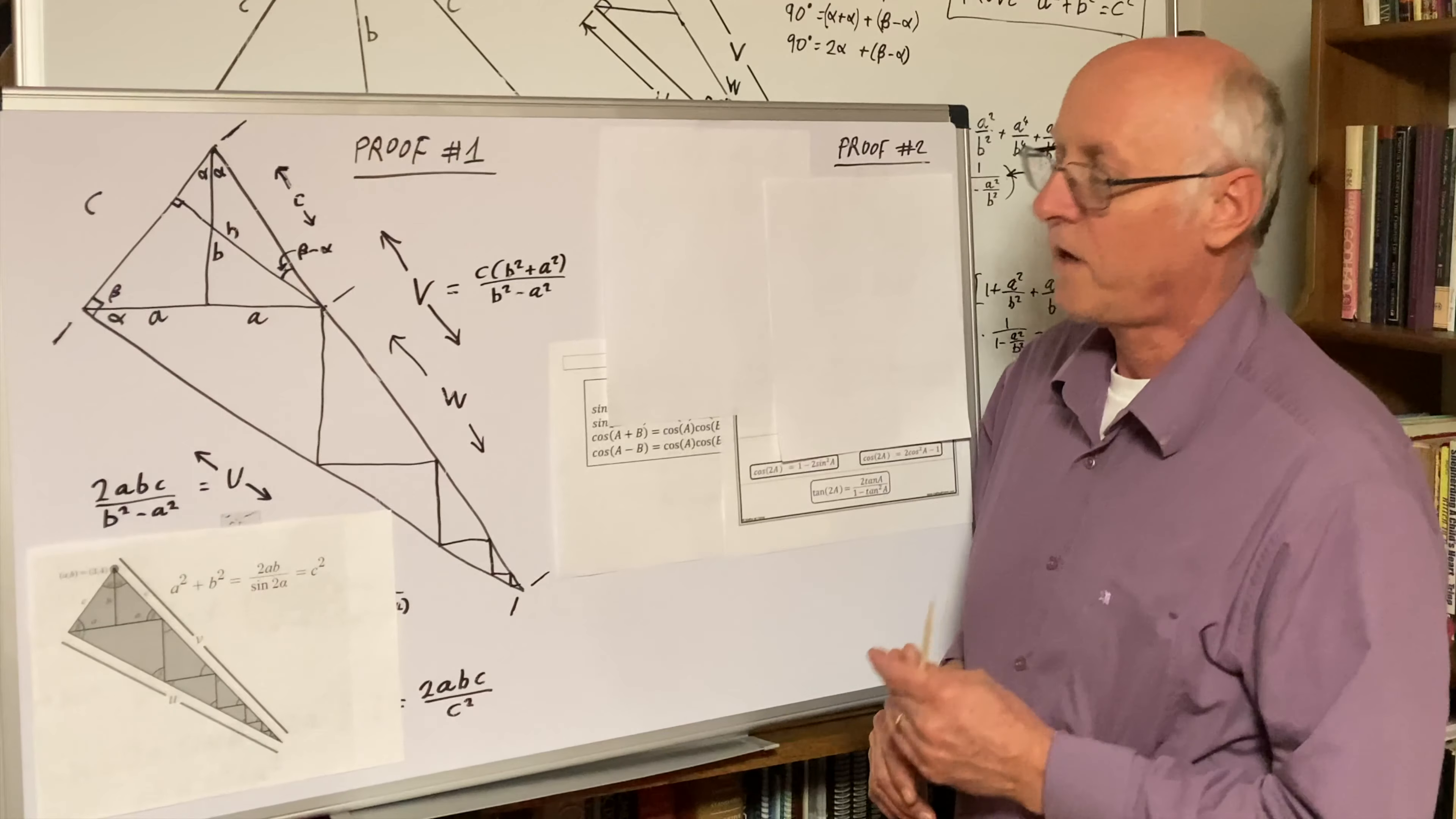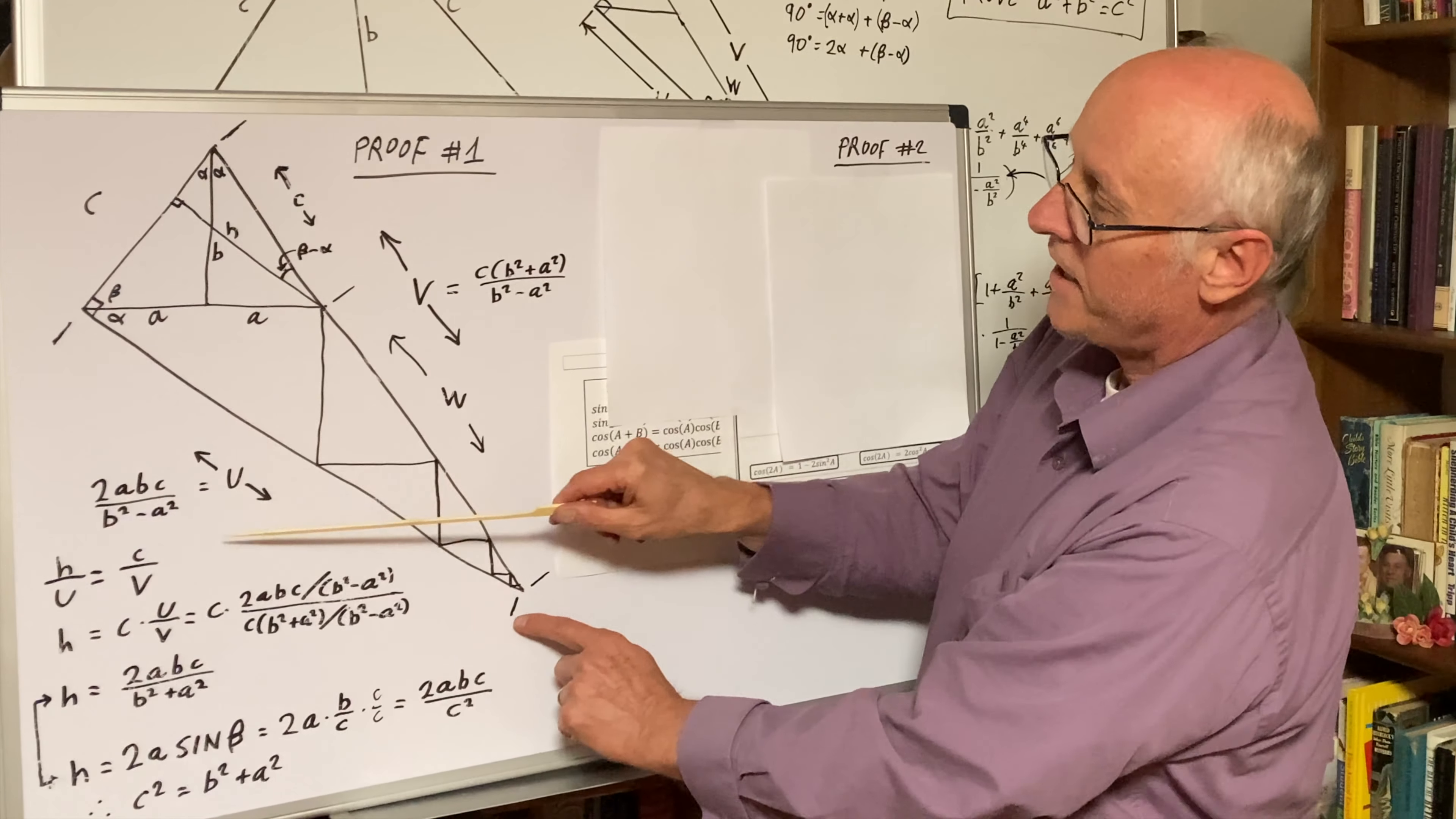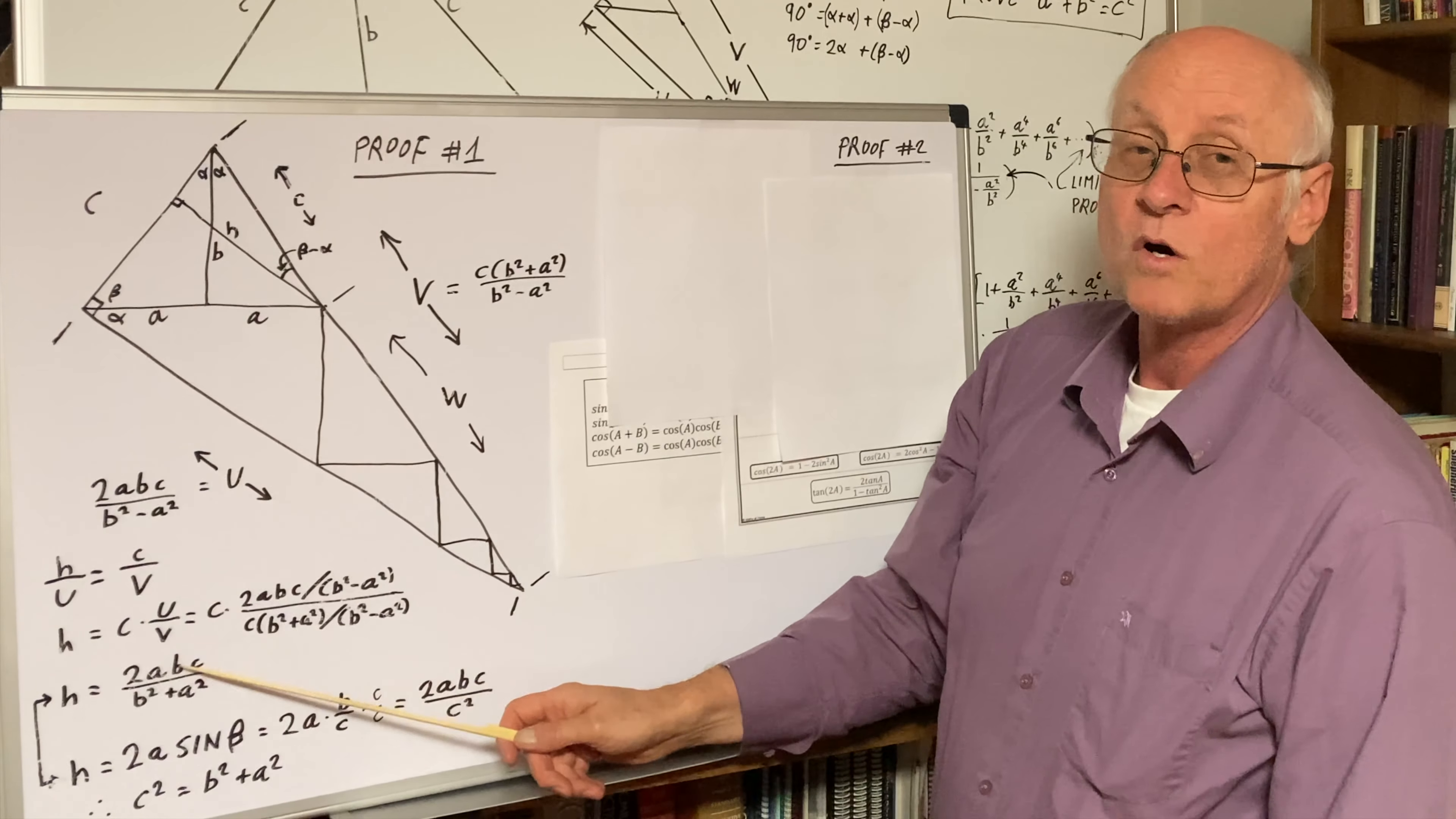If they're similar triangles, here's what we have. H is to U as C is to V. H is to U as C is to V, saying H equals C times U over V.